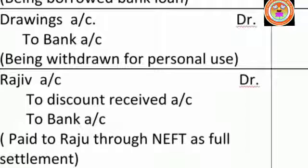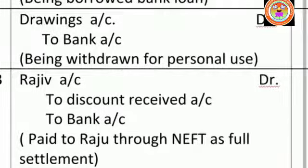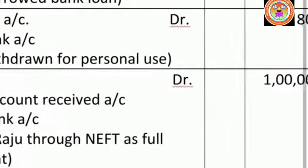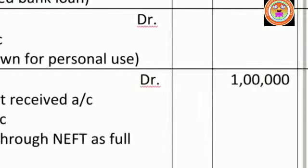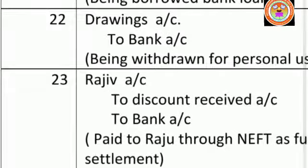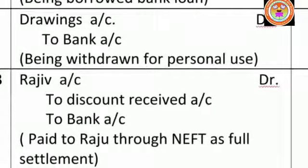He withdraws money from the bank, so the banker is the giver. According to the personal account rule — credit the giver — bank account must be credited. Write 'To bank account', amount ₹800. Write the narration: being withdrawn for personal use.